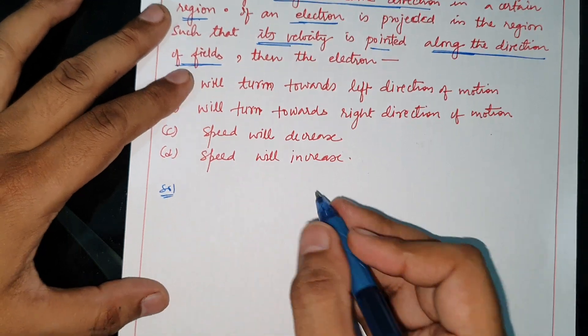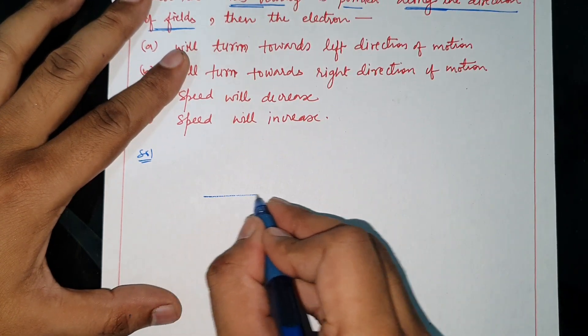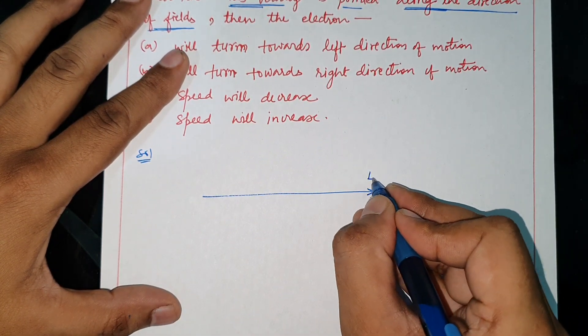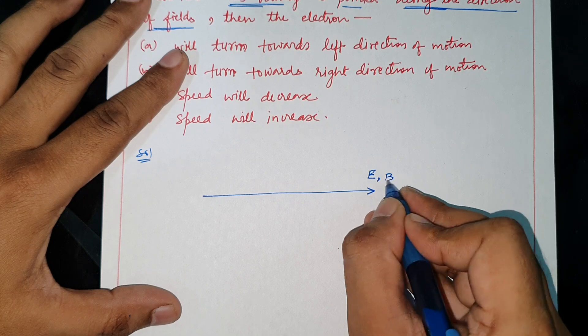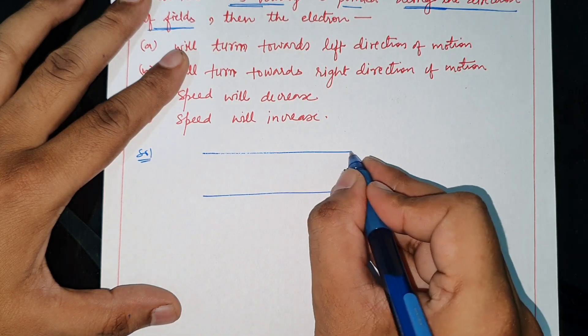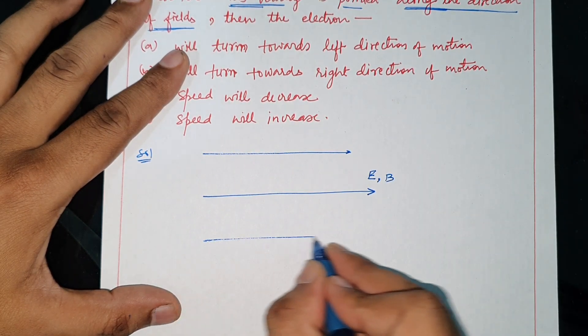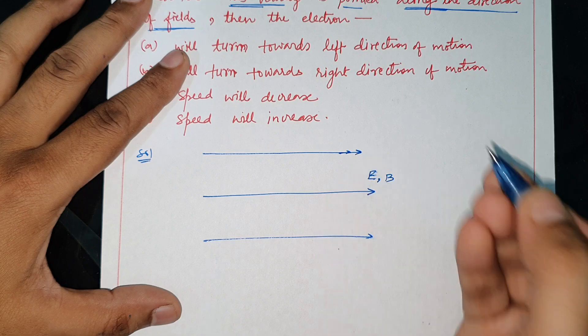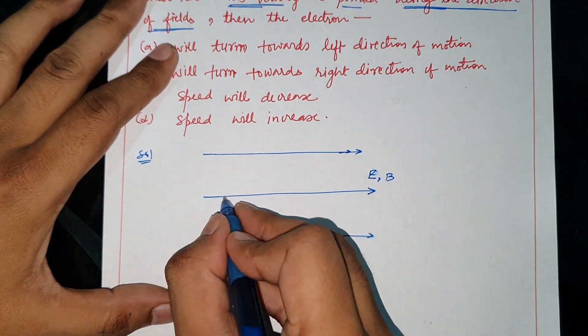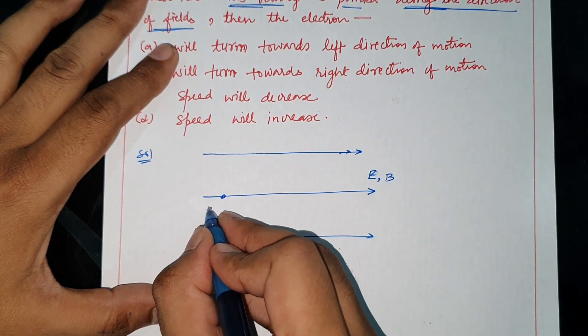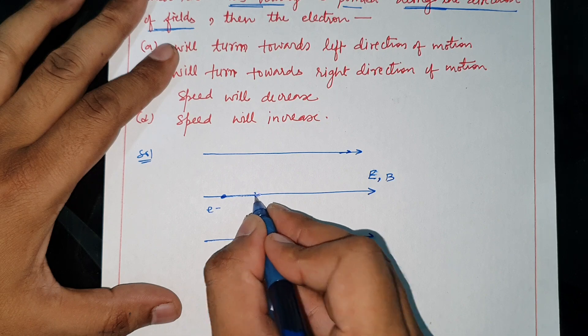Solution: Let's take a figure. We can see that there is an electric field here and a magnetic field here. Both fields are uniform. Now in this region there is an electron which is projected.